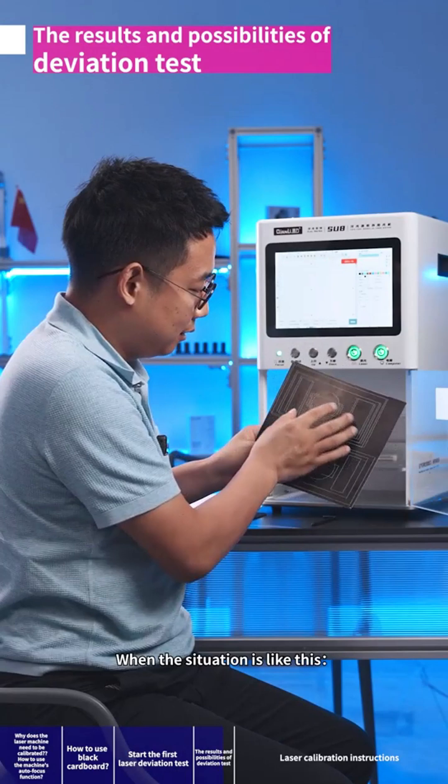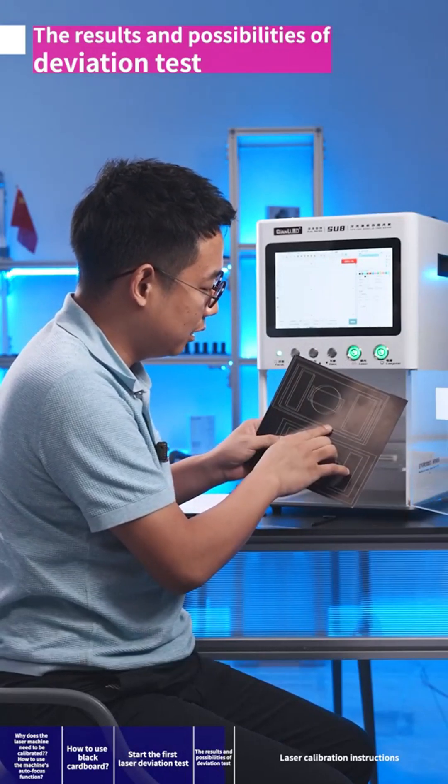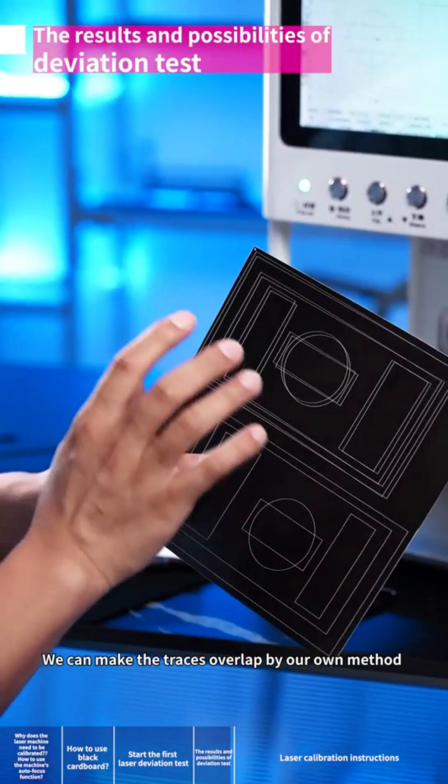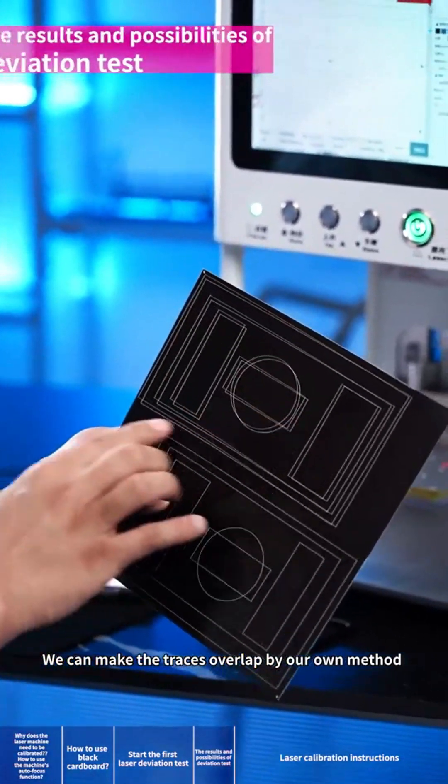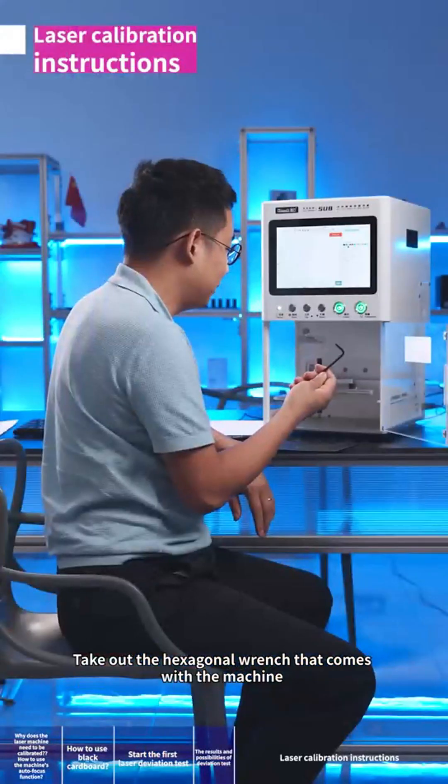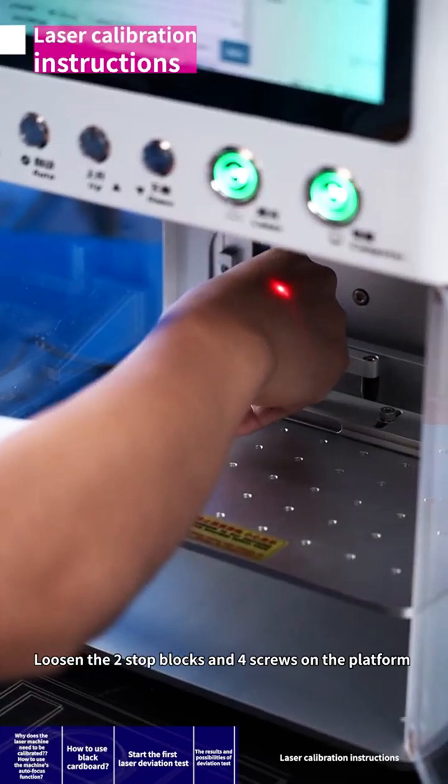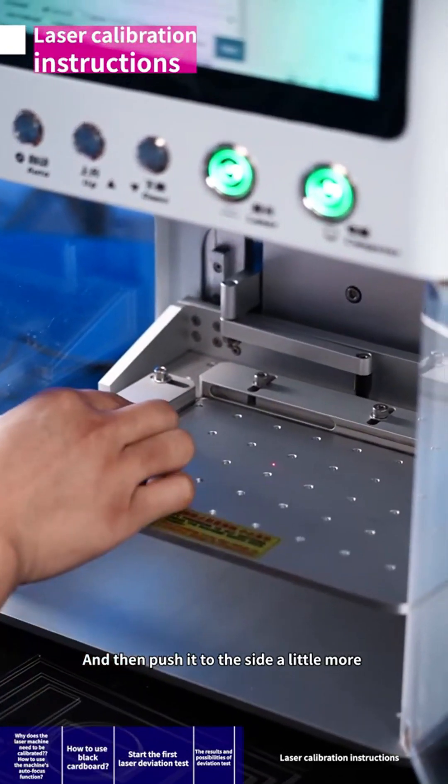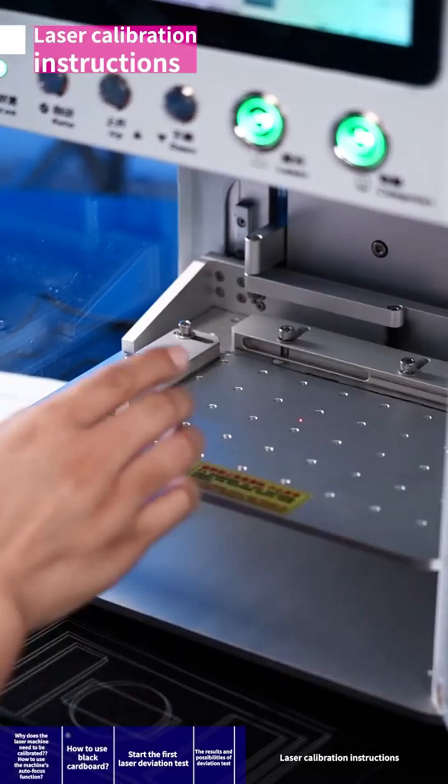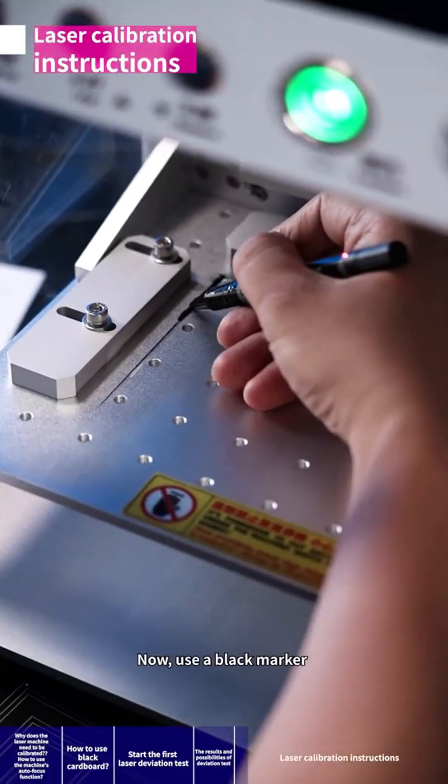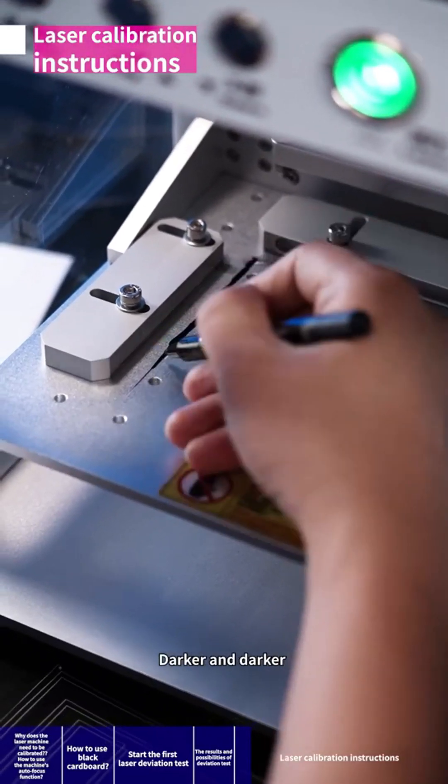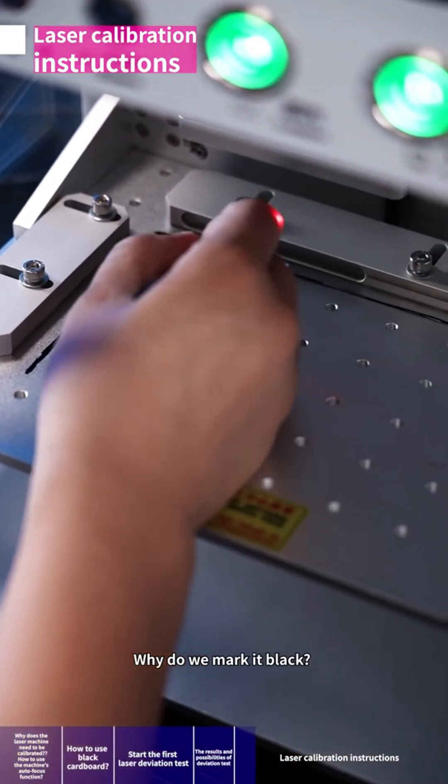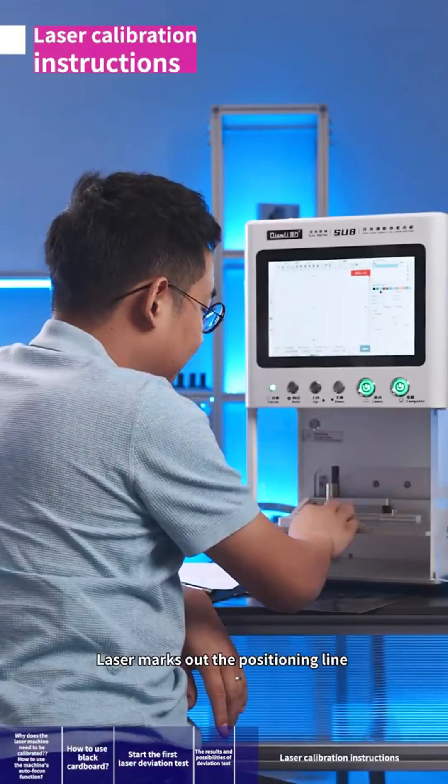When the situation is like this - two drawings didn't completely overlap and there is an obvious deviation - what should we do about it? Don't worry. We can make the traces overlap by our own method. Take out the hexagonal wrench that comes with the machine. Loosen the two stop blocks and four screws on the platform, and then push it to the side a little more. Now, use a black marker to draw a mark on the frame. Darker and darker. Why do we mark it black? Because I will use another drawing to mark it.